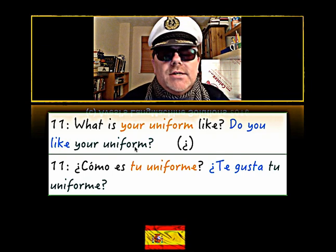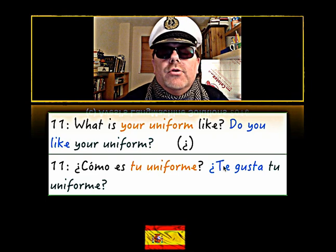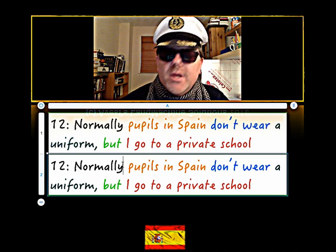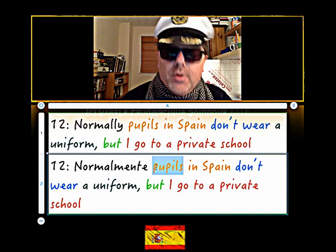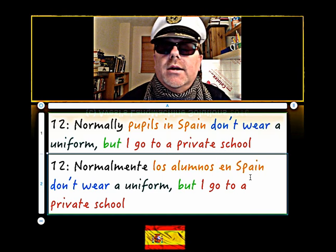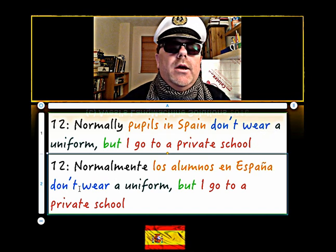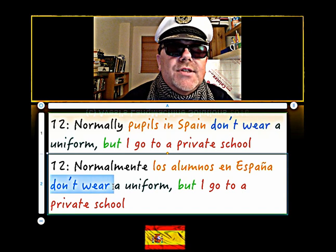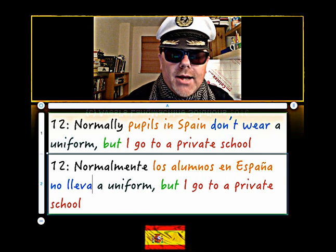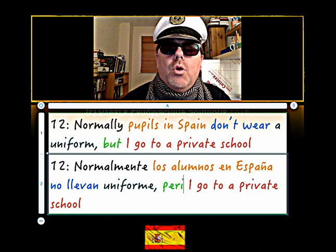And a light blue shirt - 'una camisa azul claro'. Actually I need to double check on 'claro' agreeing with the feminine. Normally - 'normalmente' - now pupils is 'los alumnos'. In Spain - 'en España' - in Hispania. Don't wear - they don't wear - so it's the 'they' form of 'llevar' - 'no llevan' - a uniform - 'uniforme'.